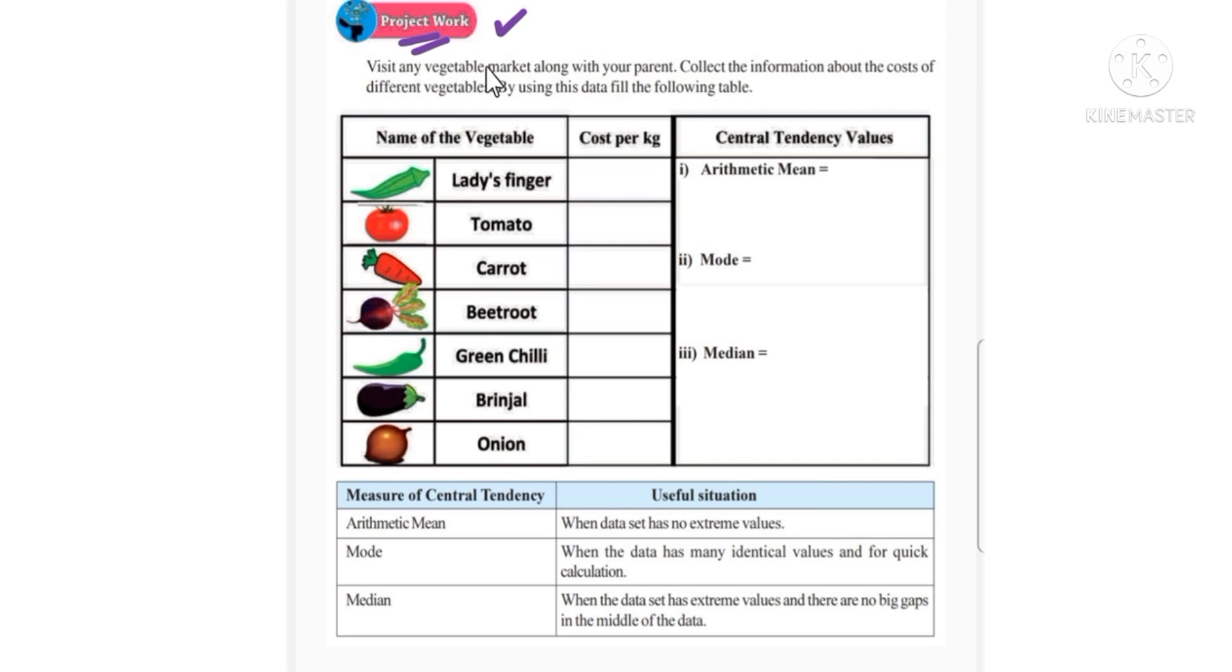I will explain how to do this project work in this video. Visit any vegetable market along with your parent, collect the information about the cost of different vegetables by using the data. Fill in the following table. So you have to go to the vegetable market and collect information about the vegetables. That means cost of lady's finger, cost of tomato, cost of carrot, beetroot, green chili, brinjal, onion, etc. Write down the cost of lady's finger per kg.